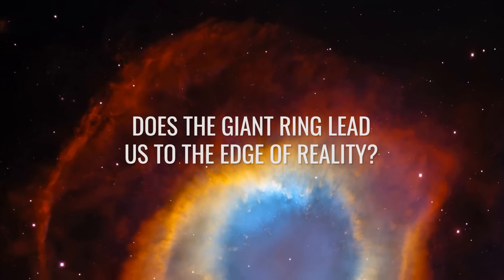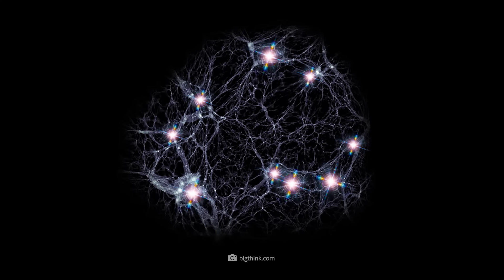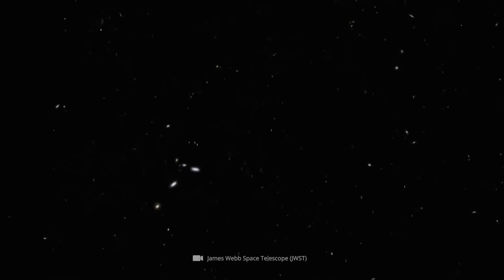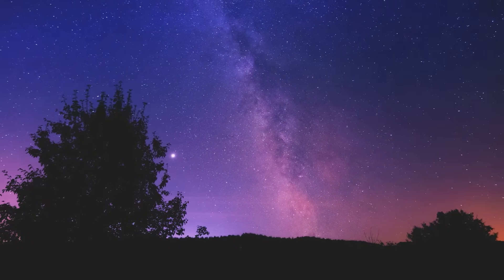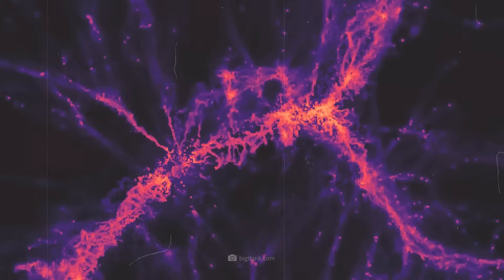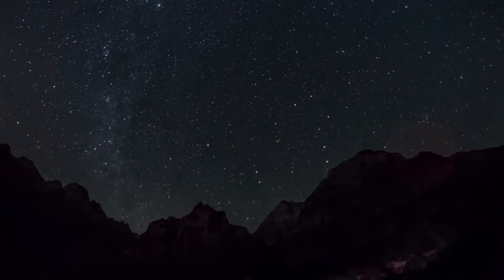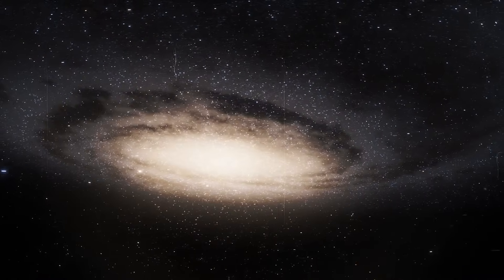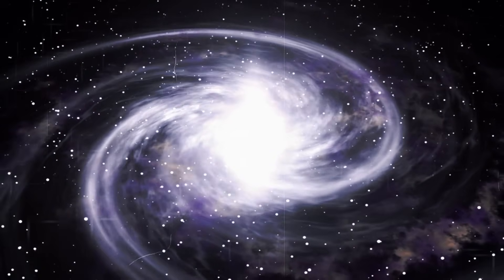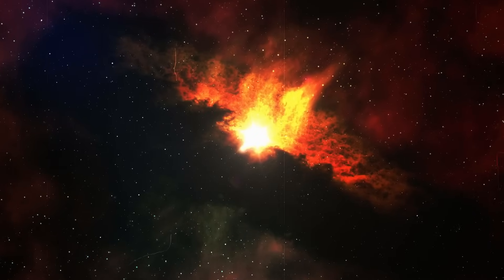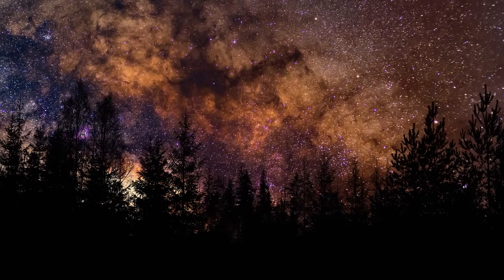Does the giant ring lead us to the edge of reality? Imagine the ring as a gigantic necklace made of galaxy beads. Hundreds or thousands of galaxies have organized themselves into a ring shape over a distance of more than a billion light years. The structure resembles a perfect circle, which is an absolute exception within the known universe. Usually, galaxies arrange themselves along thread-like filaments. This circle is not only unusual, but so perfect, huge, and strange that it goes beyond everything that was previously known about the structure of the universe. Galaxies are not randomly distributed within the ring, but follow such an amazingly symmetrical arrangement that one might think a previously unknown magic was at work.